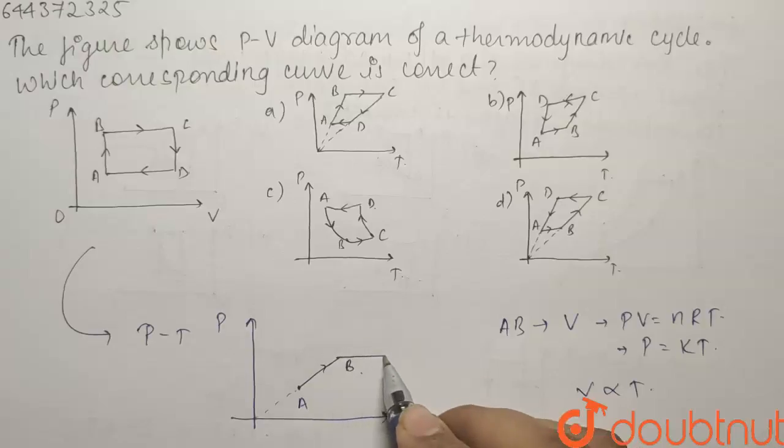The pressure is constant, temperature is increasing. So it would look something like this. This will be our new point C.